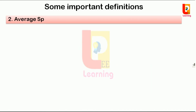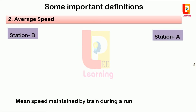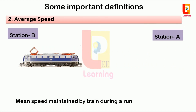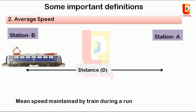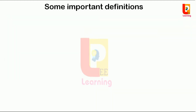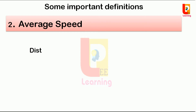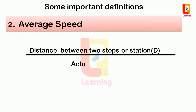Average speed: suppose a train starts from station A and goes toward station B, covering some distance D in a particular time T without stopping. The time required by the train to reach station B is the actual time of run. Therefore, average speed is the mean speed maintained by the train during a run, or it is the ratio of the distance between the two stops to the actual time of run.